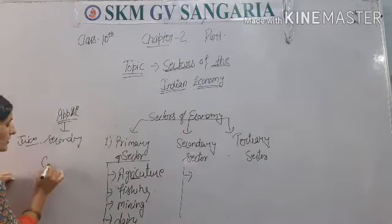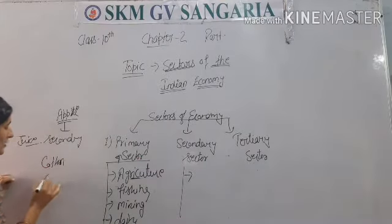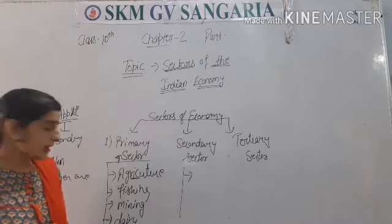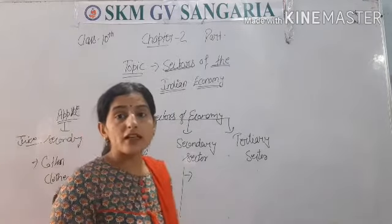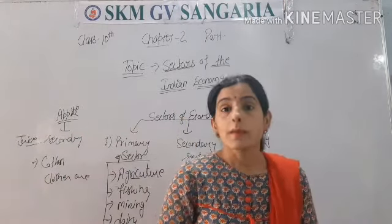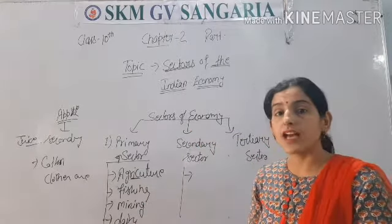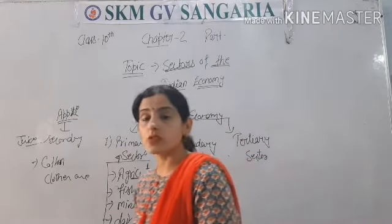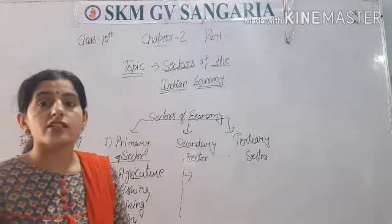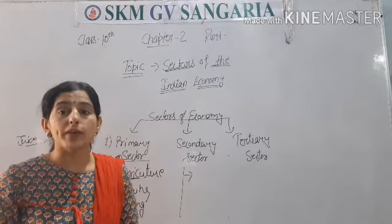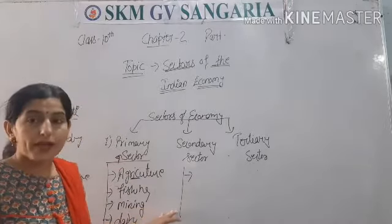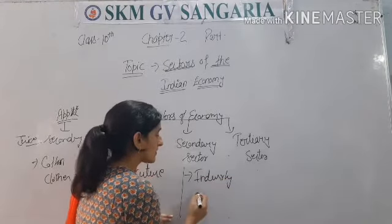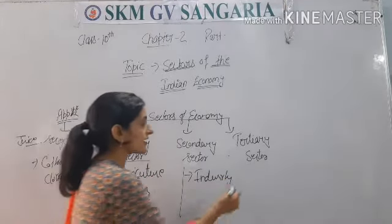For example, from cotton, cotton clothes are manufactured. From dairy products — from milk — curd, cheese, and paneer are all manufactured. So the secondary sector is that sector in which goods are manufactured. The secondary sector takes the raw material required to make goods, which is provided by the primary sector. Industries are included in the secondary sector.